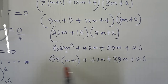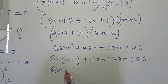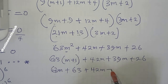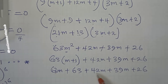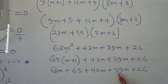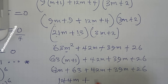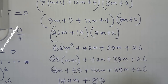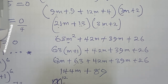Expanding 63(m+1) gives 63m + 63. So the full expression is 63m + 63 + 42m + 39m + 26. Collecting m terms: 63m + 42m + 39m = 144m. Adding constants: 63 + 26 = 89. So m^12 = 144m + 89.